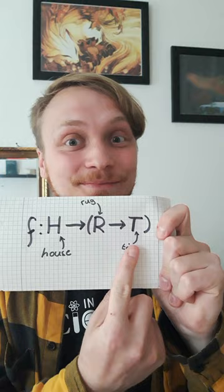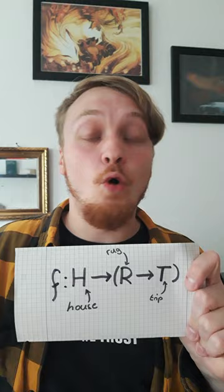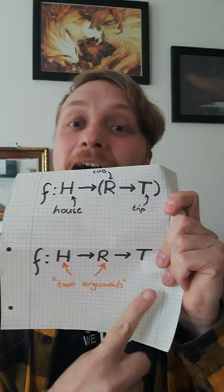But just as we would say in normal language — it's the same as saying that if you're at someone's home and there's a rug you're gonna trip — we do the same thing with functions. So this is the same as expressing it as a function taking both the argument for the house and the rug and turning it into me tripping.